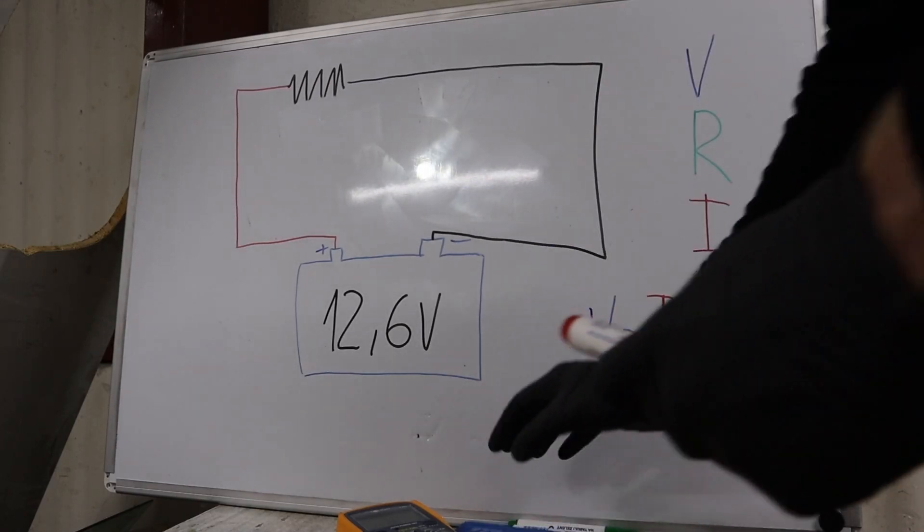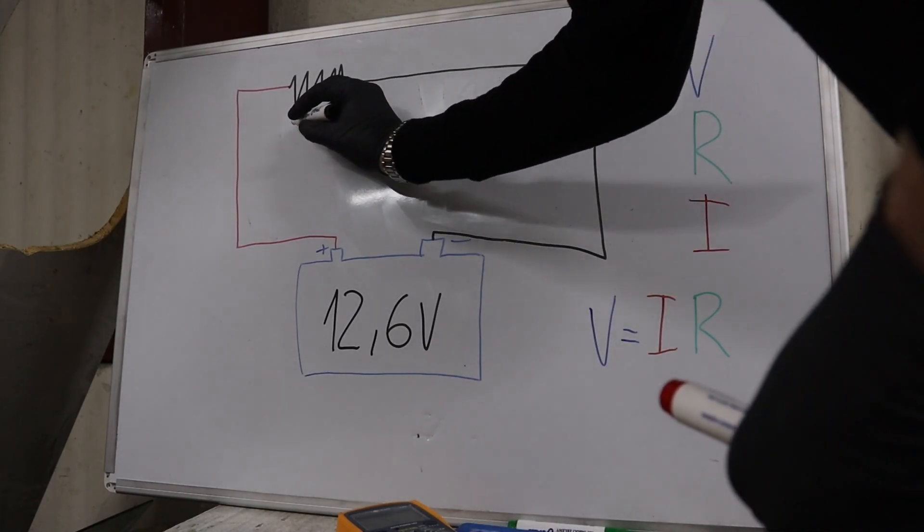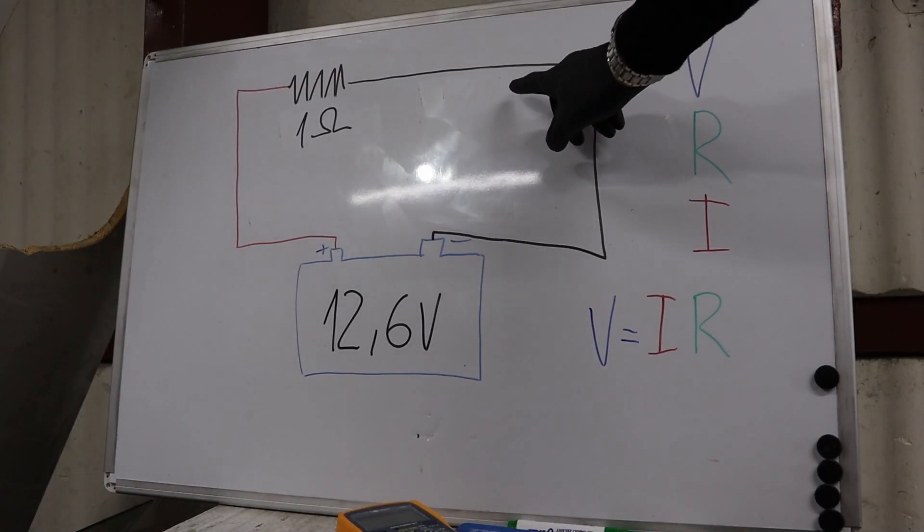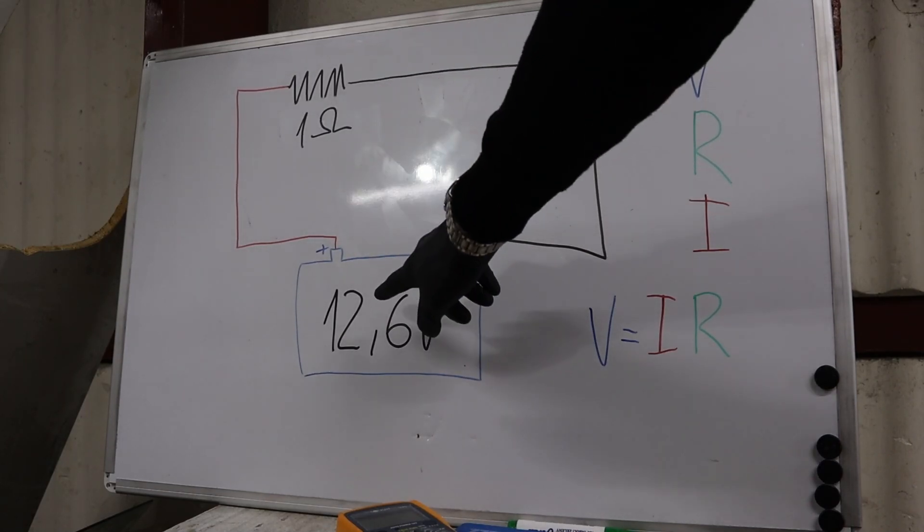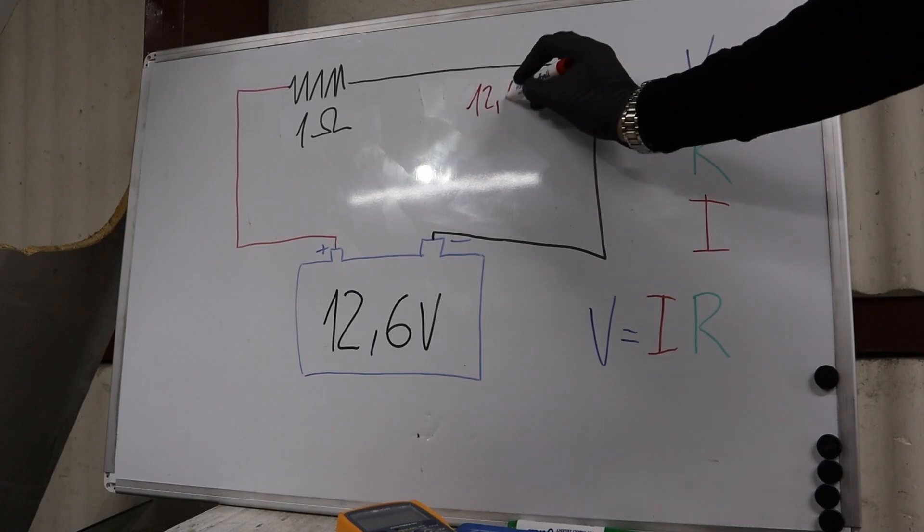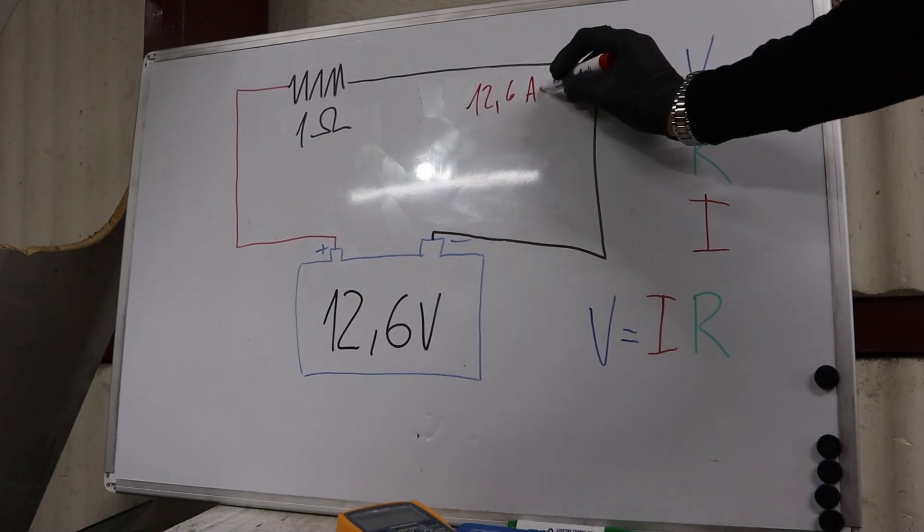Now let's say we have different resistance, only 1 ohm. Now we know that current is voltage divided by resistance, so 12.6 divided by 1 is 12.6 amps current.